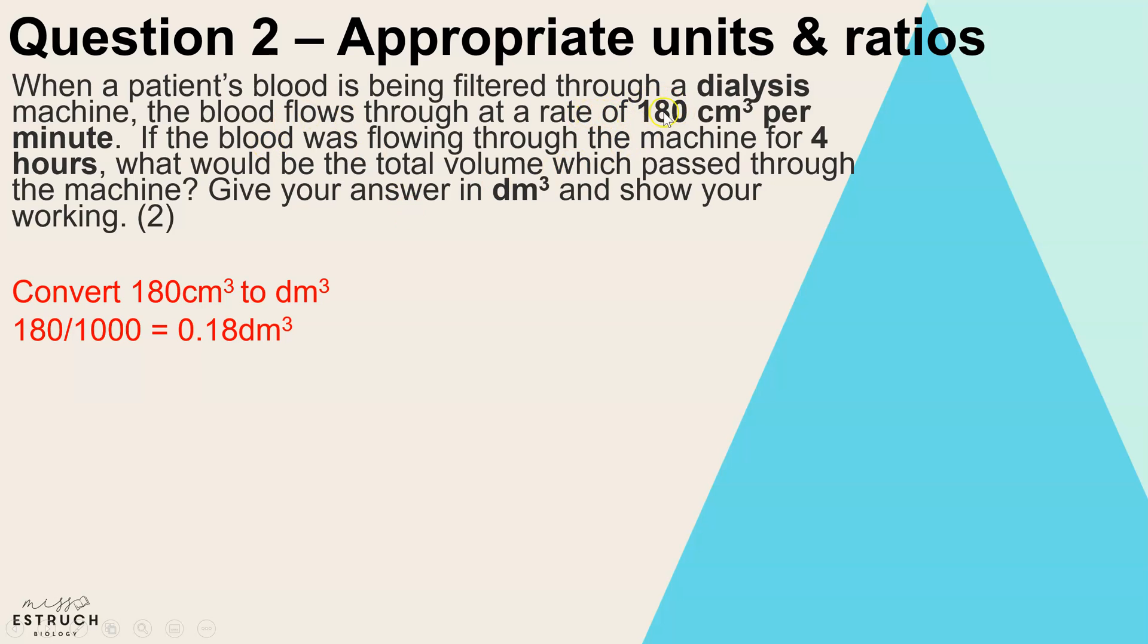That is my first step because I can see here that when we have been given a volume 180, it's in centimeters cubed. So first of all, let's convert to decimeters cubed. To go from centimeters cubed to decimeters cubed, you would need to divide by a thousand. So we have 0.18 decimeters cubed.